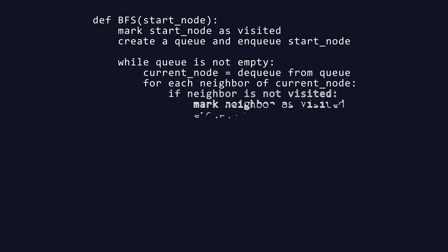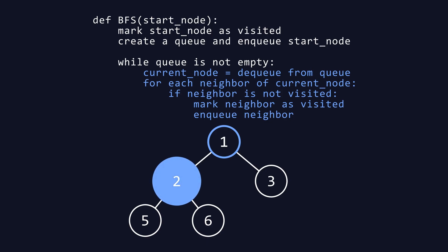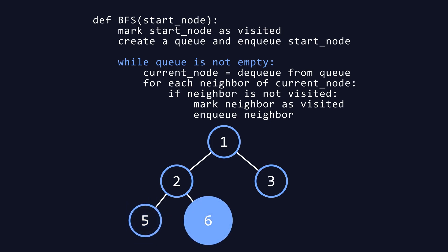Here's an implementation of BFS. We start by marking the start node as visited and creating a queue, then enqueue the start node. While the queue isn't empty, we dequeue the first node in the queue and call it the current node. Then, for each neighbor of the current node, if the neighbor hasn't been visited, we mark it as visited and enqueue it. This process continues, exploring all nodes level by level, ensuring we visit each node at the shortest possible distance from the start node.